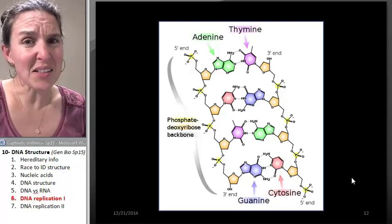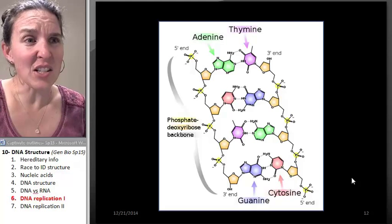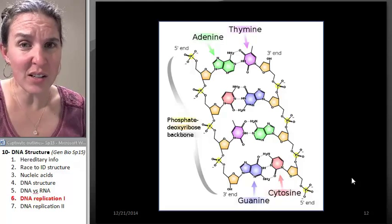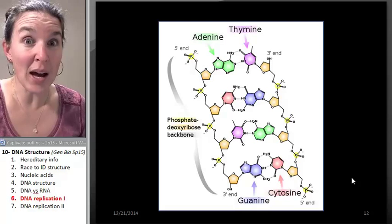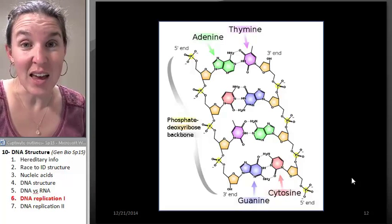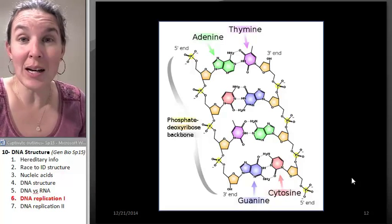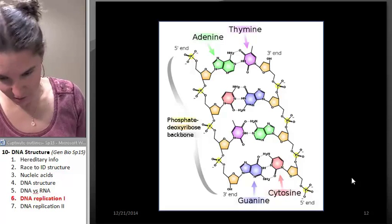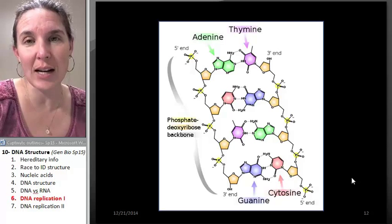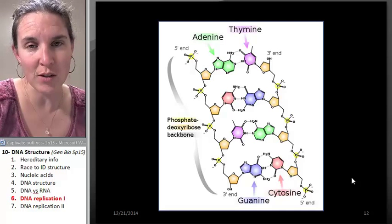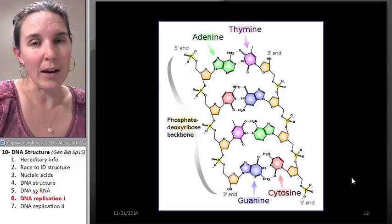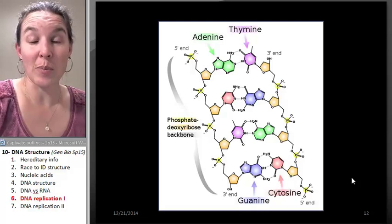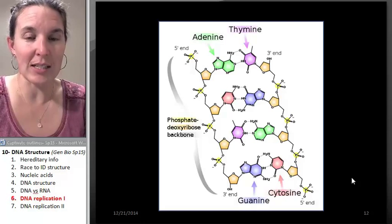You started out as a single cell, and you are no longer a single cell. So you had to make copies of every cell, which means you better make copies of the entire genetic code inside each cell every time your cell is replicated. We're going to go into DNA replication processes in a second.